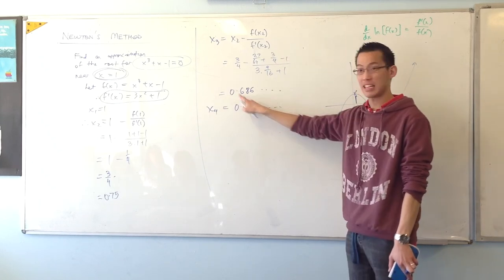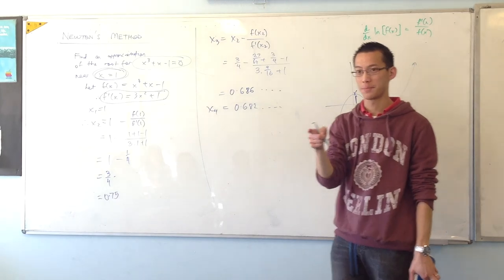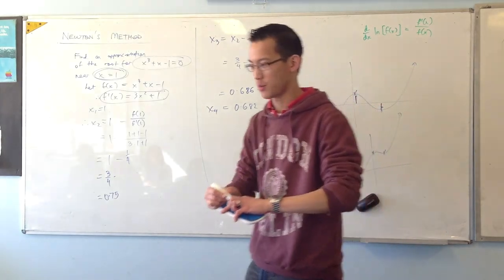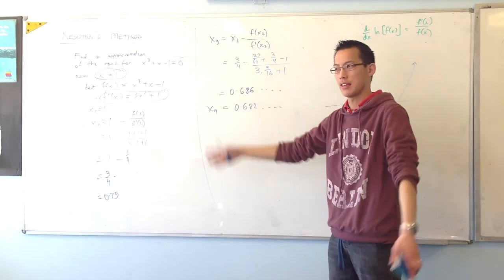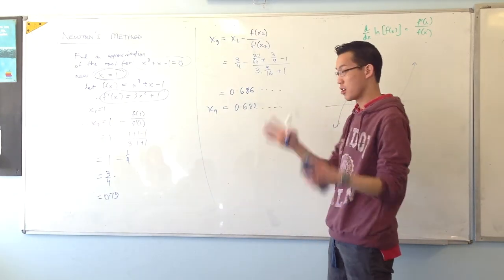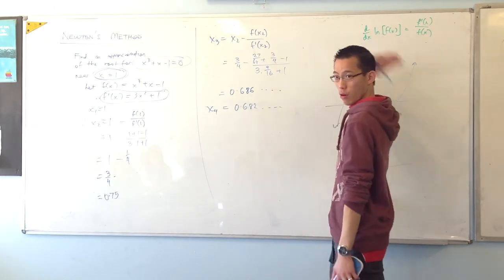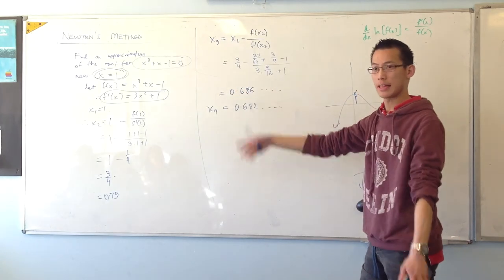It took us two applications just to get to one decimal point on the previous one. Different questions will, depending on the kind of function you get, and which side you guess is on, and all that kind of thing, that'll determine how quickly it takes. Like, there's no automatic. After two steps, you will always be two decimal places, something like that. You just gotta test it out.